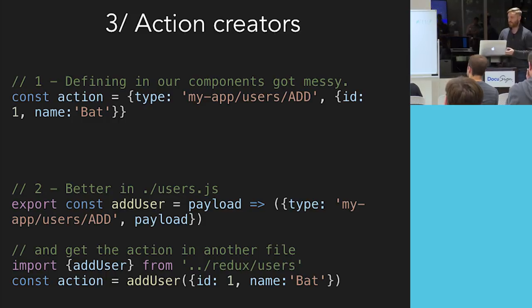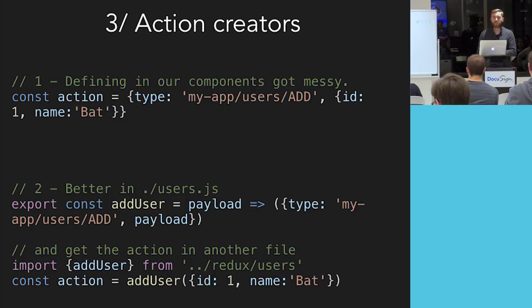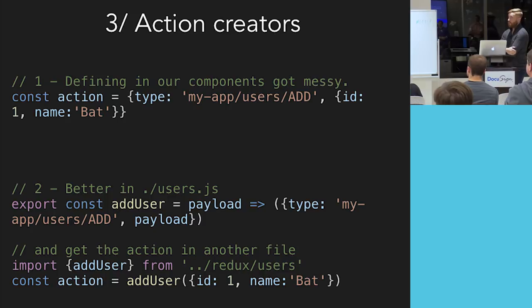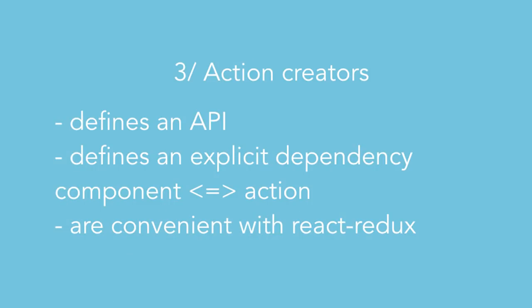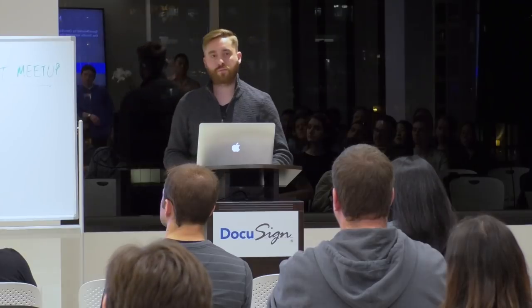A good example was the login button. We had several ways to log into the application, and when we had to refactor it, finding the 12 touch points where logging in could happen took a full day — it shouldn't have taken that long. One way to solve this is using action creators. Action creators are small functions that generate the action object we need. We define this function in another file and include it wherever we need to generate those objects. The advantages are multiple: it defines an API, it catalogs how we generate actions and interact with state, and it creates an explicit dependency between the component and the action. Many libraries, including React Redux, assume you're using action creators.